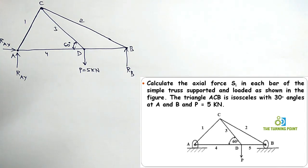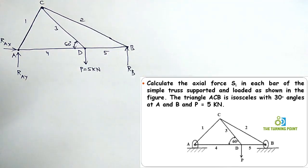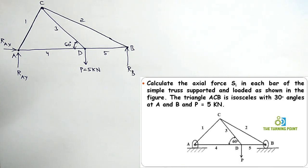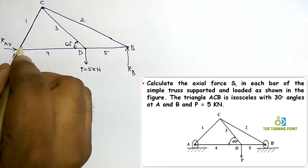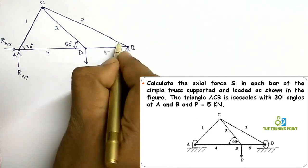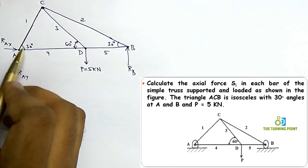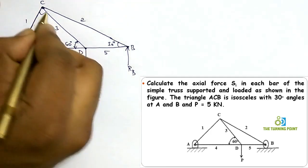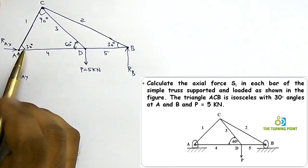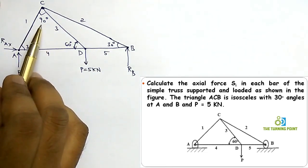Check whether lettering is given to joints and numbers to members — the numbering is already given in the question. From the question, the triangle ACB is isosceles with 30-degree angles at A and B. So angle A is 30 degrees, angle B is 30 degrees, and since the sum of angles in a triangle is 180 degrees, the remaining angle at C is 90 degrees.